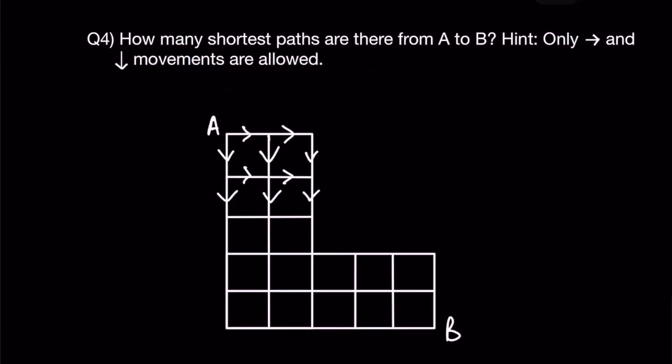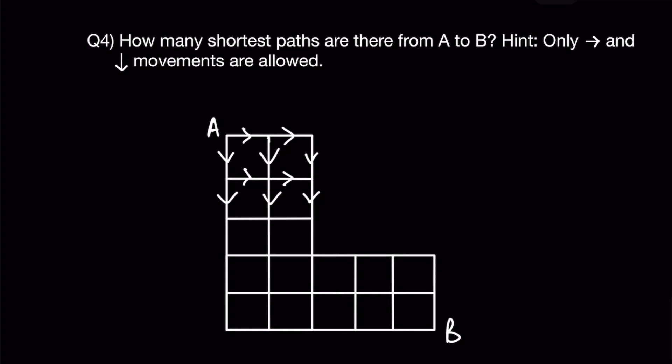Moving on to question 4. How many shortest paths are there from A to B? You are given a hint where you can only use right and downward movements in this question. For this kind of question, it's similar to a counting type question. All you have to do is add up the diagonal numbers. Let's take a look at this dot over here. How many ways will there be to reach that? There will only be one way which is through here.